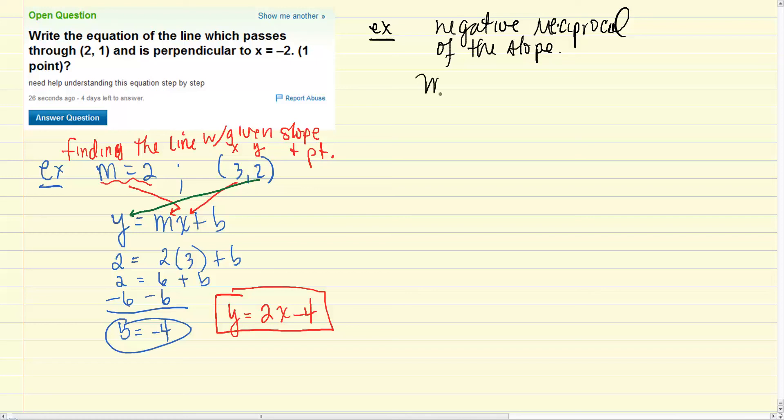So for instance if you have m equals 4 then this is going to give us m equals negative 1 fourth in the case of the perpendicular. If let's say we have m equals 1 then this is going to give us m equals negative 1 because the reciprocal of 1 is of course 1. It needs to be a negative so m equals negative 1.